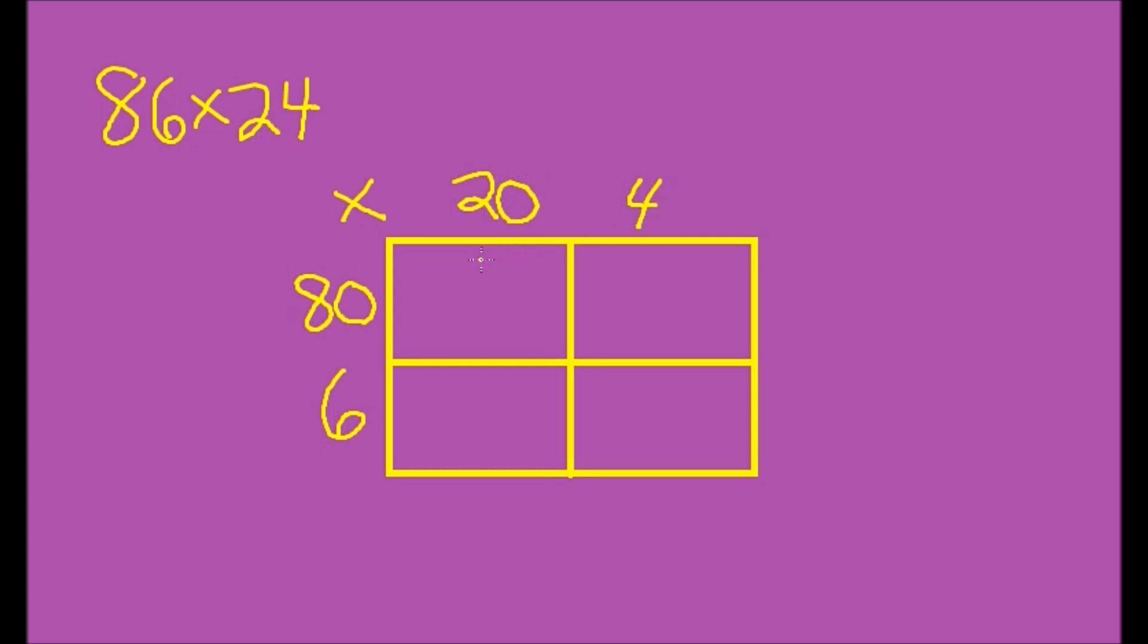Now all we have to do is multiply these four numbers together. So when I look here at 80 times 20, I can do the 8 times 2 which is 16 as a shortcut, and then add the two zeros on, and we get 1600.